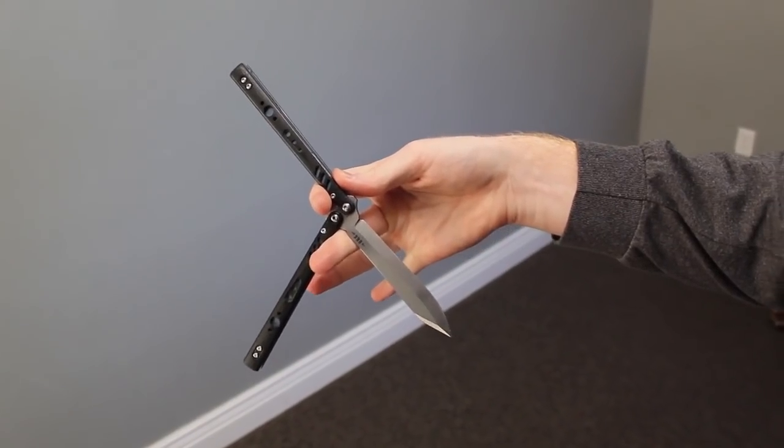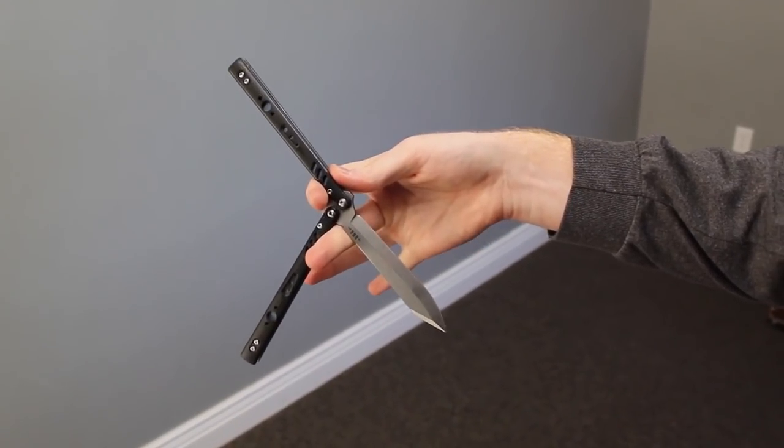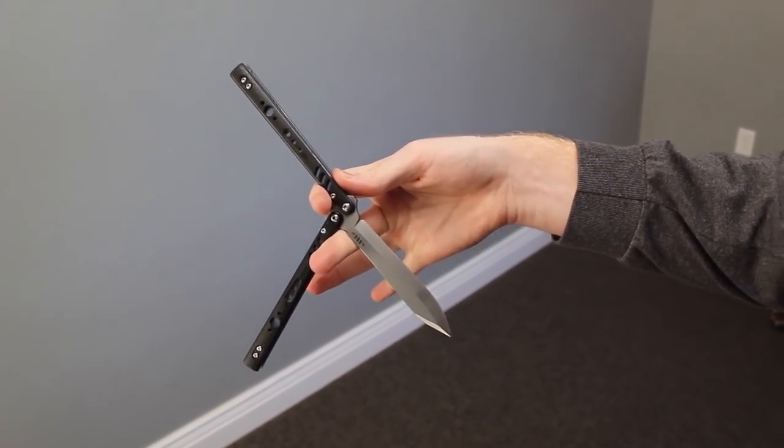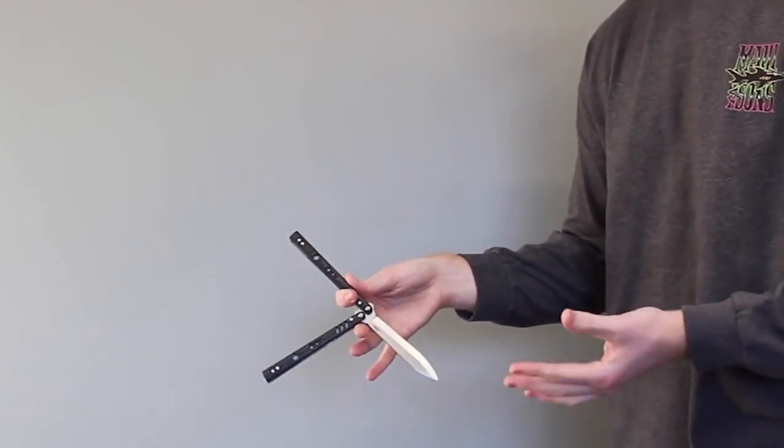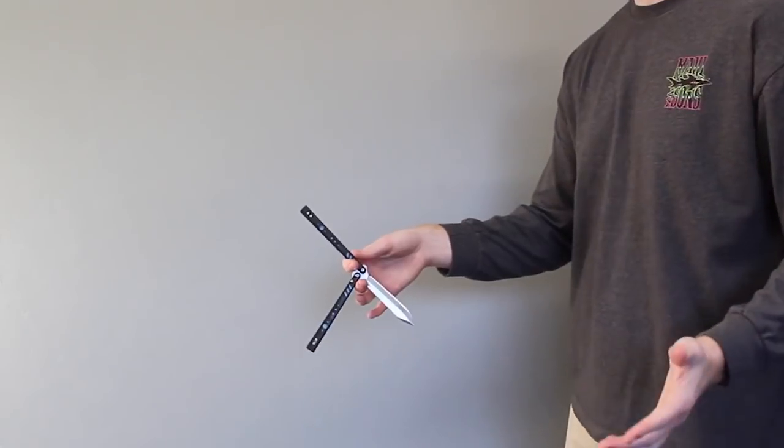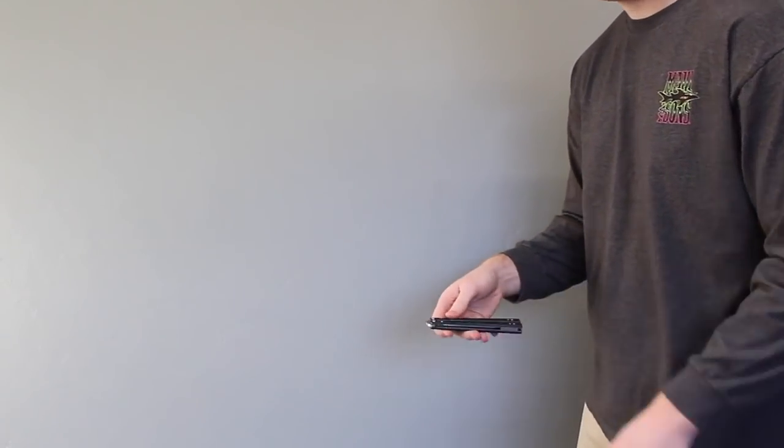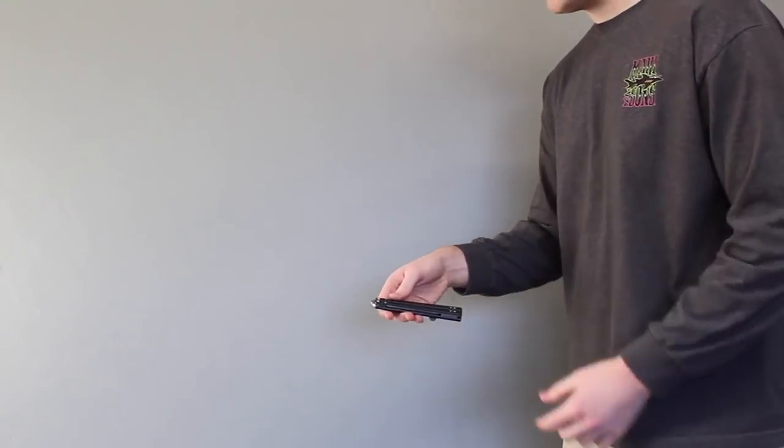Now, do take note that doing the trick full speed, this all happens very fast. But for the purposes of tutorializing this and slowing it down, I'm showing it in these broken steps. So just follow along. This is the final position that you're going to have it in that part of the trick. And I'll show you what that should look like in full speed right here.